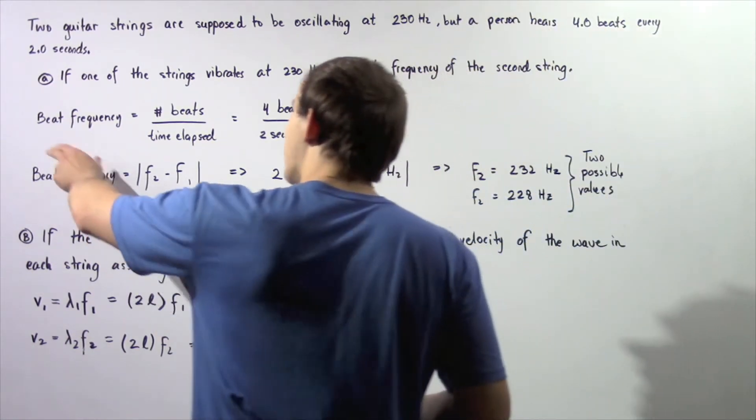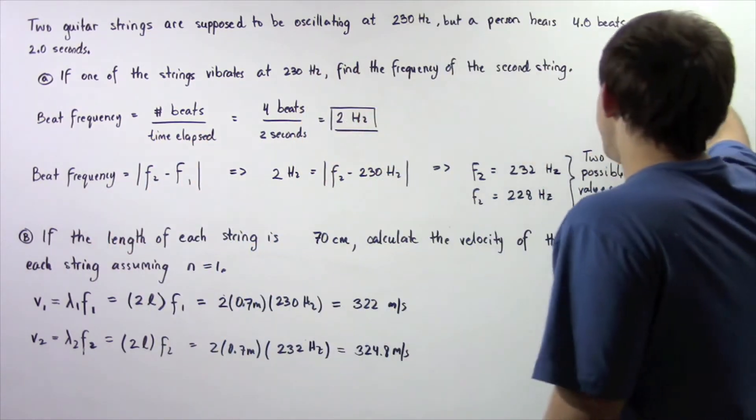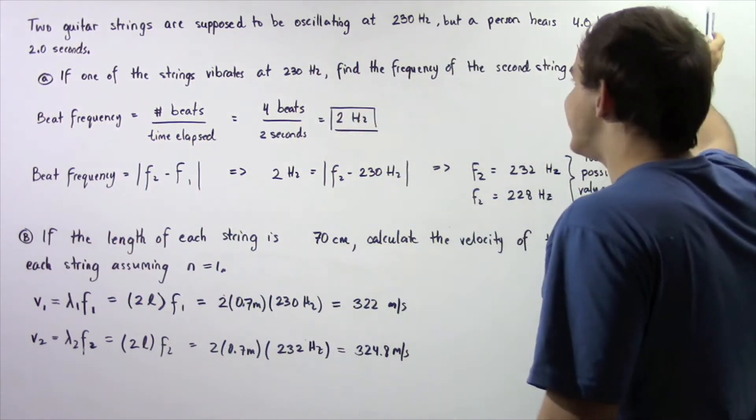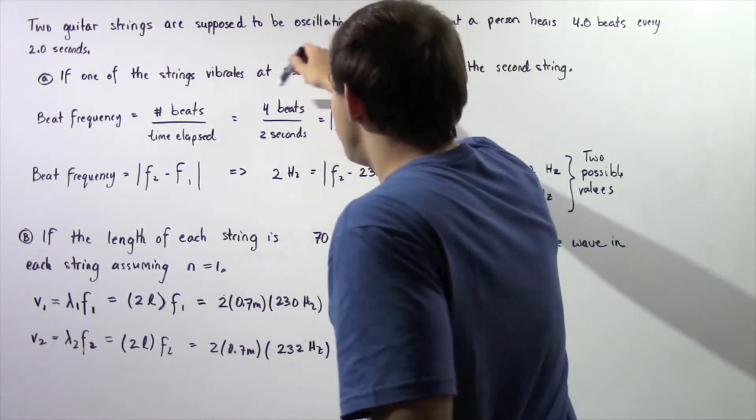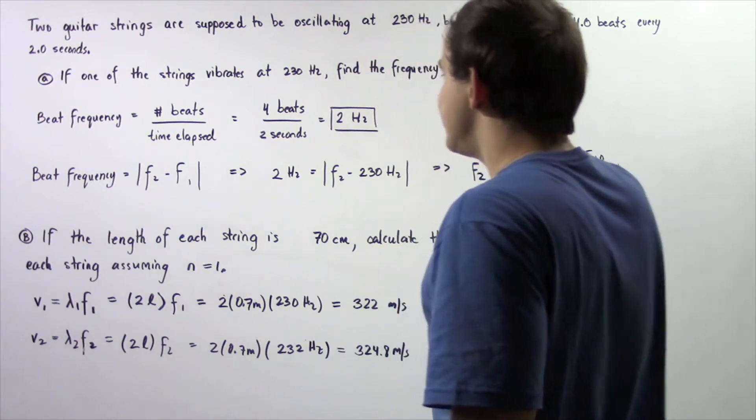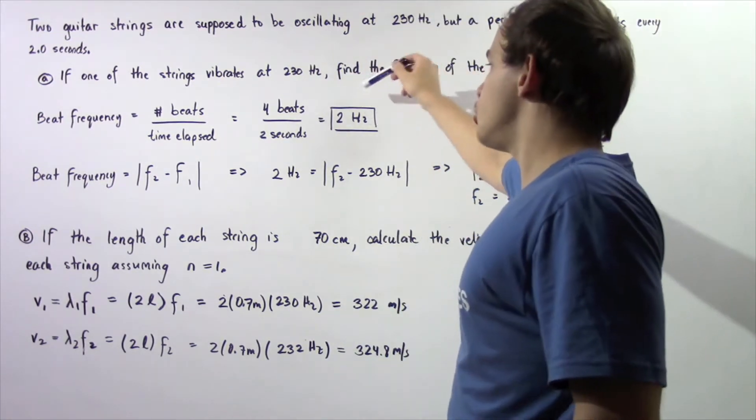First we want to find the beat frequency. The beat frequency is given by taking the number of beats and dividing by the time it takes to hear those beats. So four beats divided by two seconds is equal to two beats every second or equivalently two Hertz.